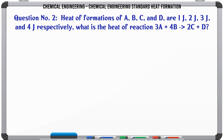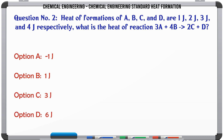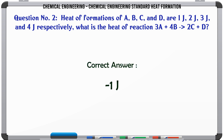Heats of formation of A, B, C and D are 1J, 2J, 3J and 4J respectively. What is the heat of reaction: 3A + 4B → 2C + D? A) -1J. B) 1J. C) 3J. D) 6J. The correct answer is 1J.